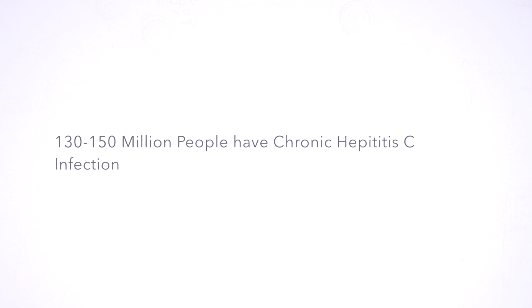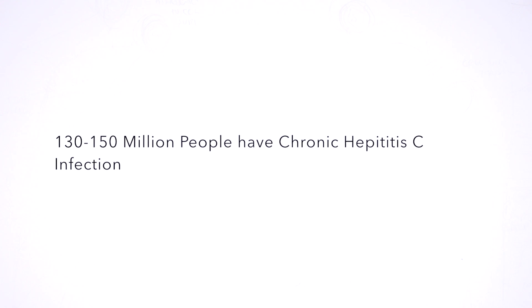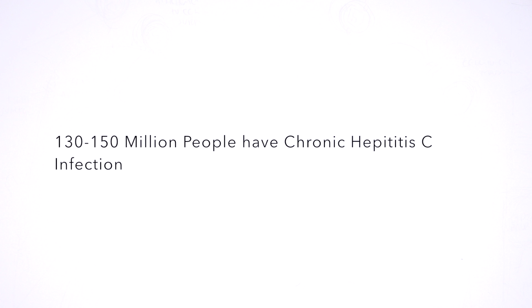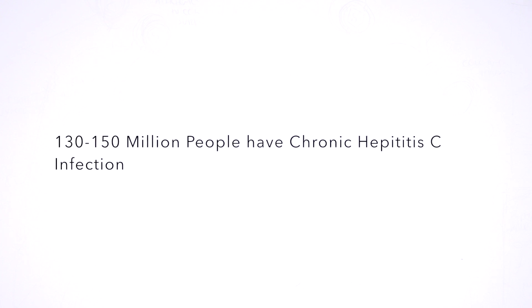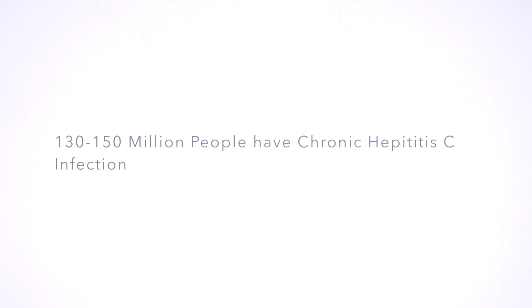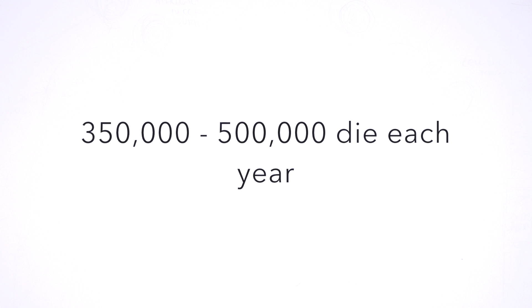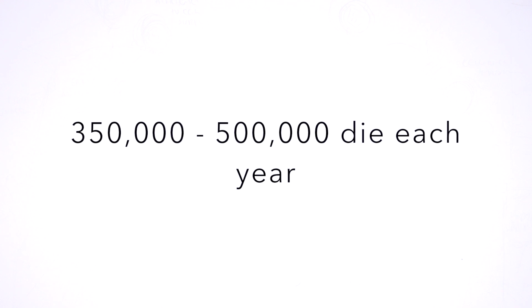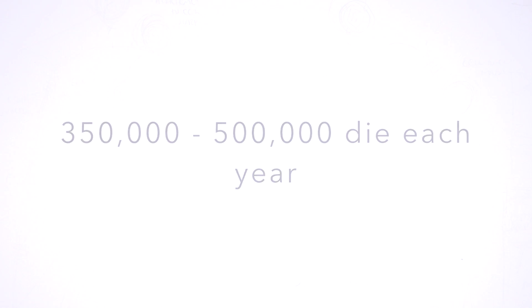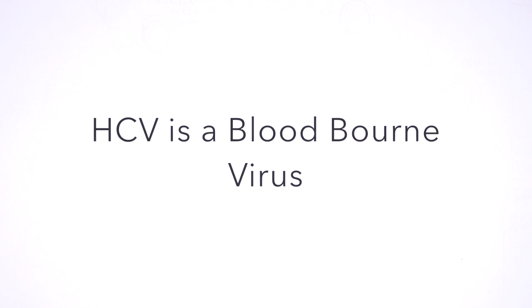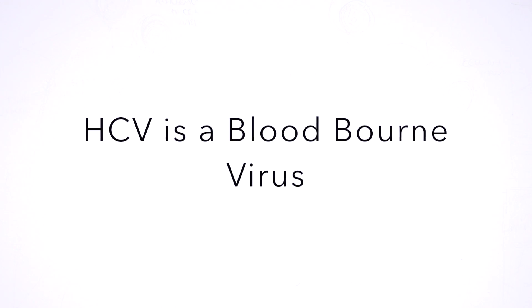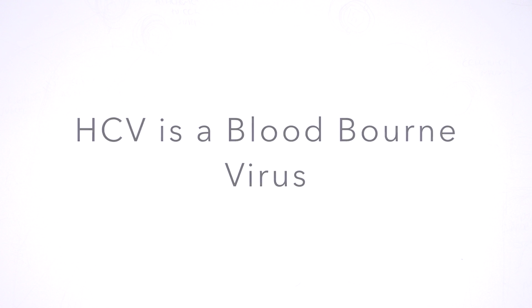Between 130 and 150 million people globally have chronic hepatitis C infections. A significant number of those who are chronically infected will develop liver cirrhosis or liver cancer. About 350,000 to 500,000 people die each year from hepatitis C related liver diseases. The hepatitis C virus is a blood-borne virus, and so the main mode of transmission is through blood, most often due to unsafe injection practices.